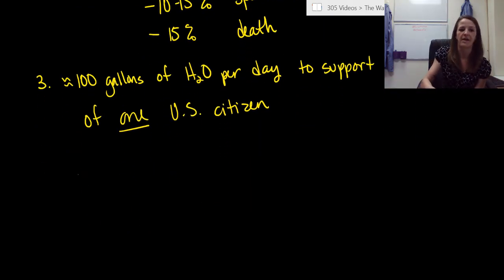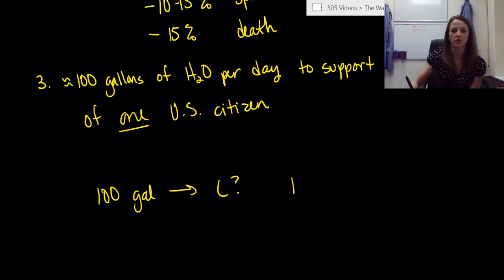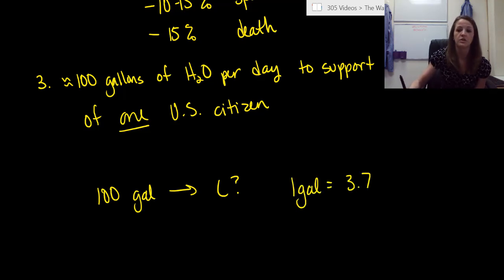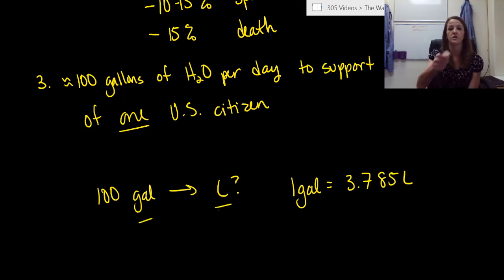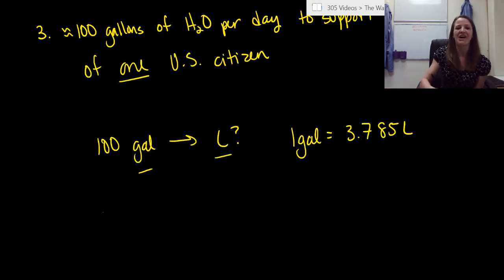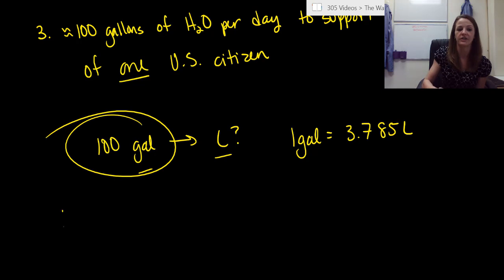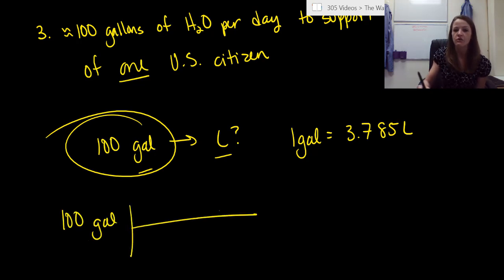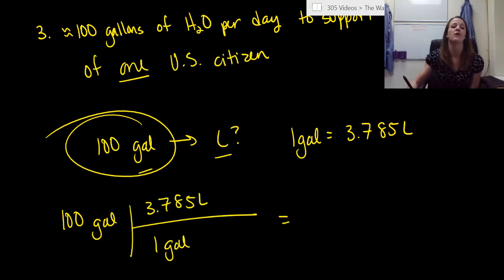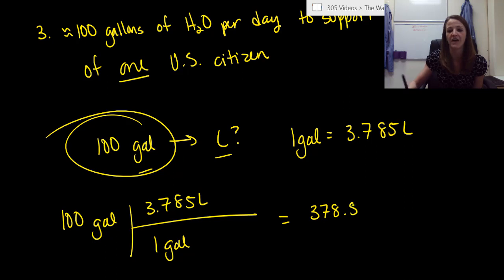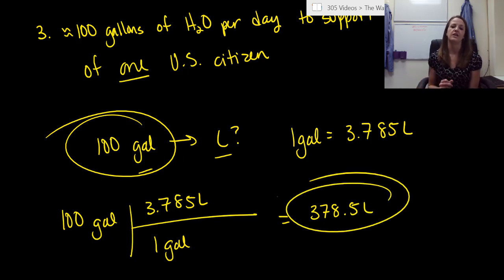The last thing I want you to do is a quick math problem. In 100 gallons of water, how many liters is that? I'll give you one conversion to help: one gallon equals 3.785 liters. So convert gallons to liters. All you had to do was start with 100 gallons, and for every one gallon you have 3.785 liters, so multiply 100 times 3.785 and you get 378.5 liters — needed per day to support the lifestyle of one American citizen. That's not good, folks. Drink water.